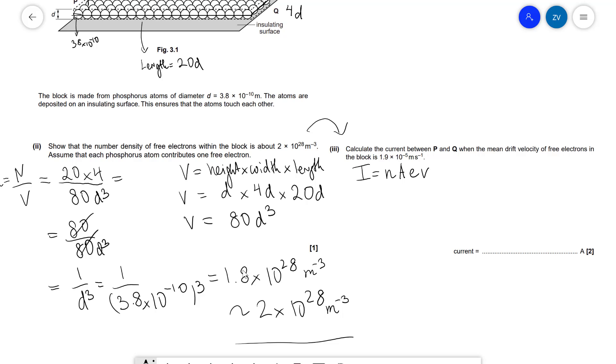Just to avoid any rounding error, I'm probably going to use my more accurate value which is 1.8 × 10²⁸. I'm going to multiply by our area. Now what will the area be?